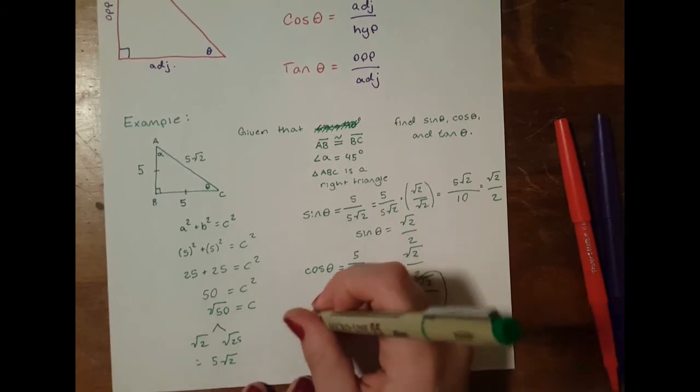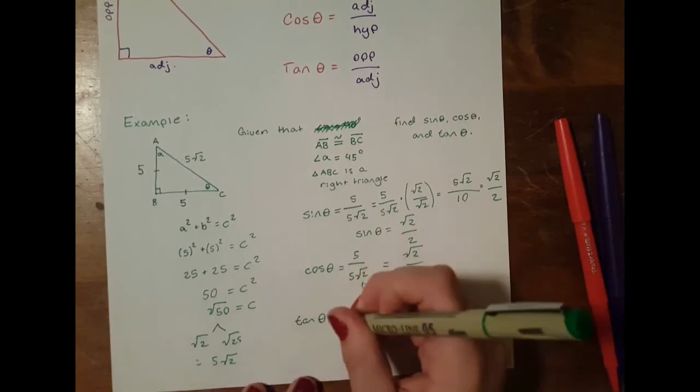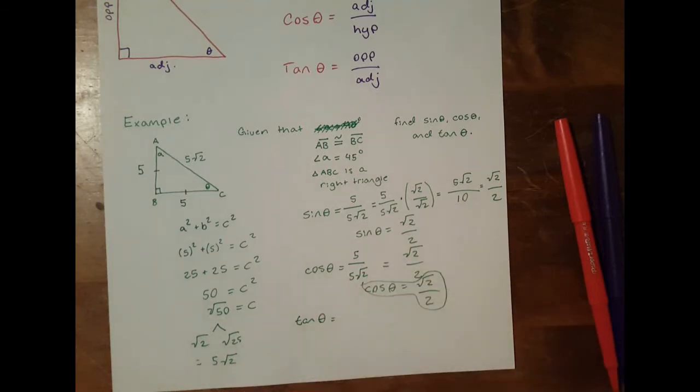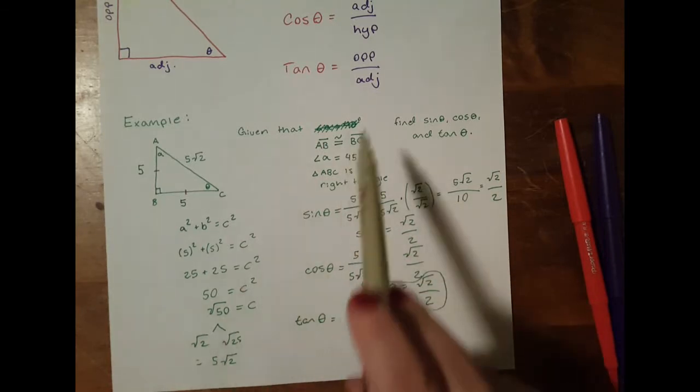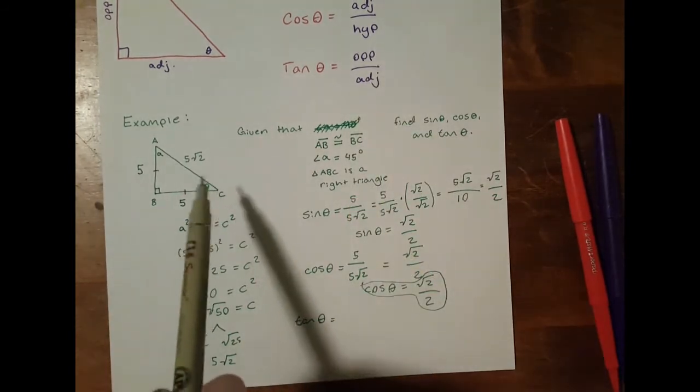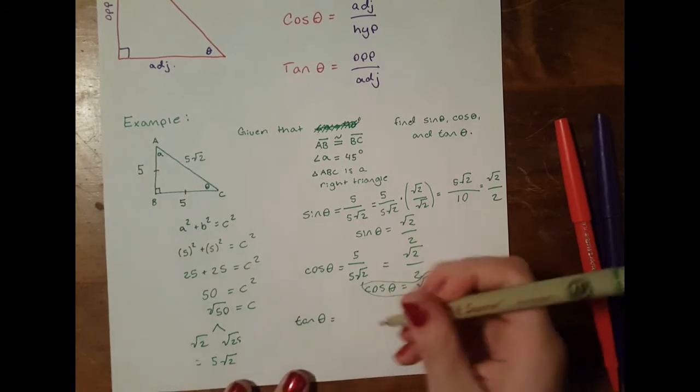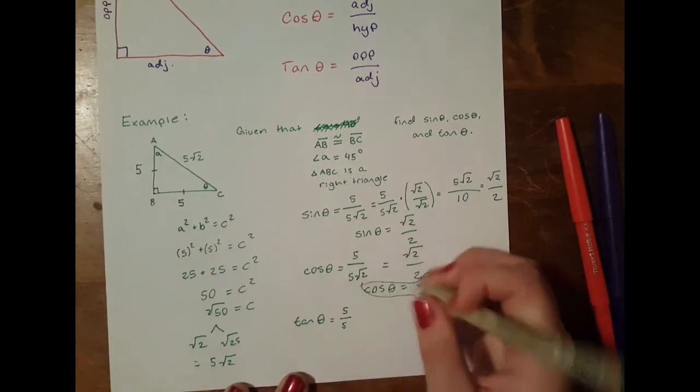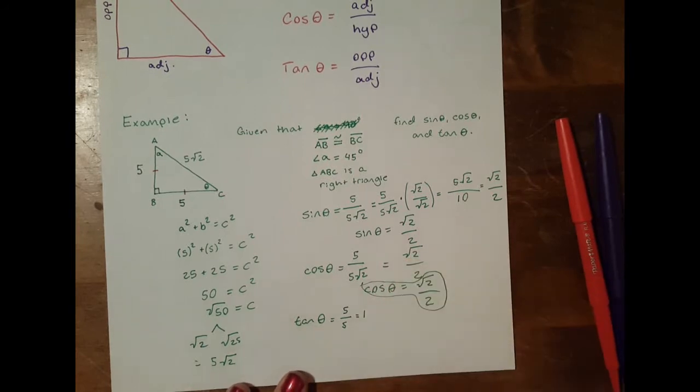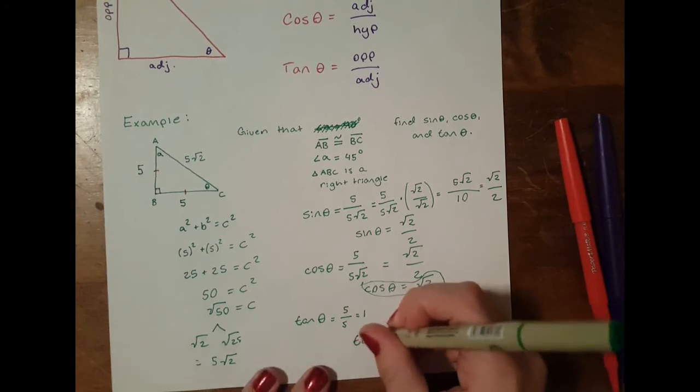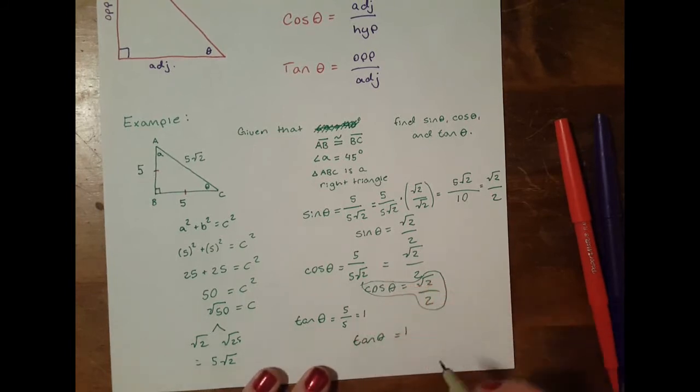And our last one, we want to know what tangent of theta equals. And we know that tangent is equal to opposite over adjacent. So in relation to theta, our opposite is 5 and our adjacent is 5, so this one's easy. Tangent of theta equals 5 over 5, which equals 1. So now we have our sine, our cosine, and our tangent, which is all we asked for.